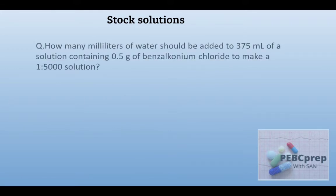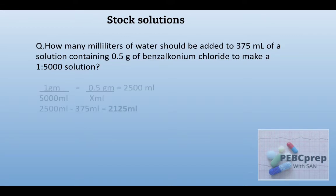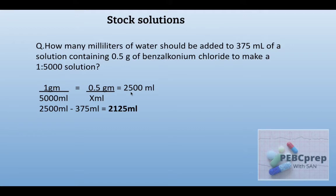Next question: how many milliliters of water should be added to 375 ml of a solution containing 0.5 grams of benzalkonium chloride to make a 1:5000 ratio strength solution? Our final ratio strength concentration is 1:5000. If 1 gram is in 5000 ml, then 0.5 grams would be in 2500 ml — that is the final volume. We already have 375 ml, so we subtract from 2500 and get 2125 ml of water to add.